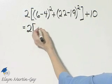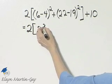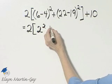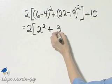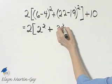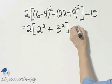That would be 6 minus 4 which is 2, and then that is to be squared. Plus 22 minus 19, that is 3, and that is to be squared plus 10.